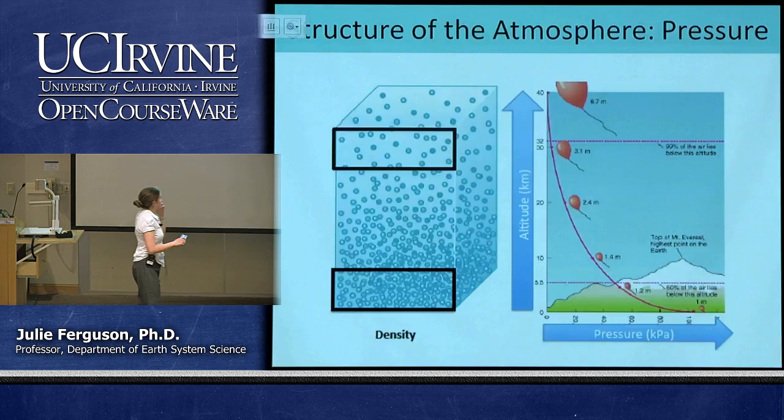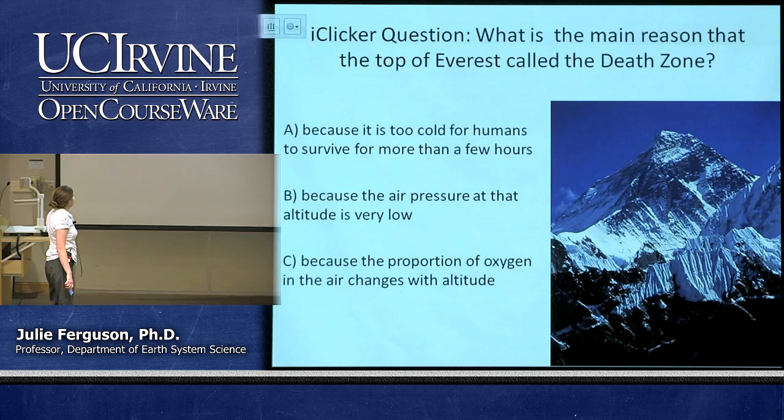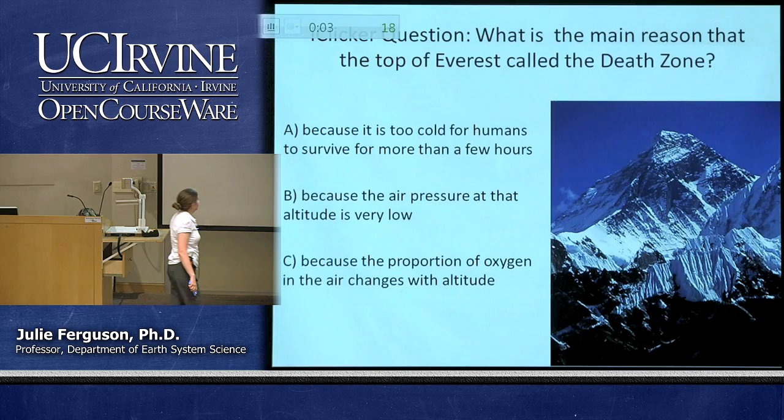So tell me — this is a beautiful picture of Mount Everest. Why is the top of Mount Everest called the Death Zone, apart from to make it sound dramatic? Is it because it's too cold for humans to survive more than a few hours? Is it because the air pressure at that altitude is very low? Or because the proportion of oxygen in the air changes?